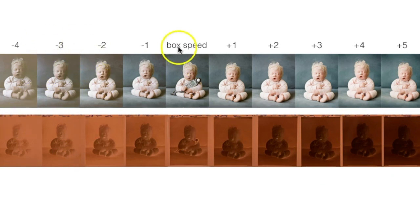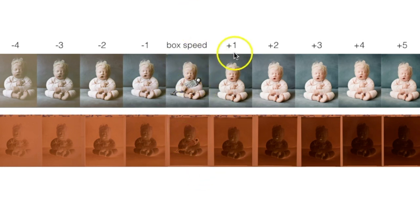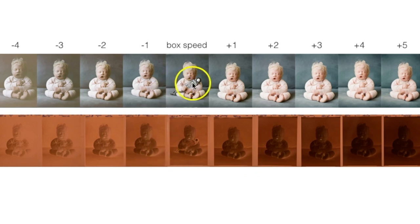You don't need to be way over-exposed and you never want to be under-exposed. Rate at box speed, meter for your shadows — I'll link a video below showing how to meter for shadows — and you're going to get a perfectly dense negative every time. I hope that helps!